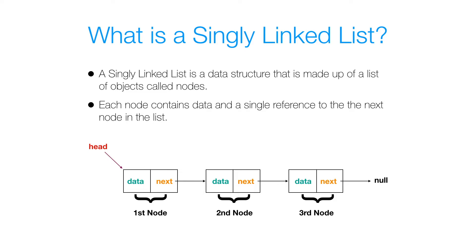Our first node has a reference to our second node, our second node has a reference to our third node, and our third node has a reference to null. Our first node always has a head reference.